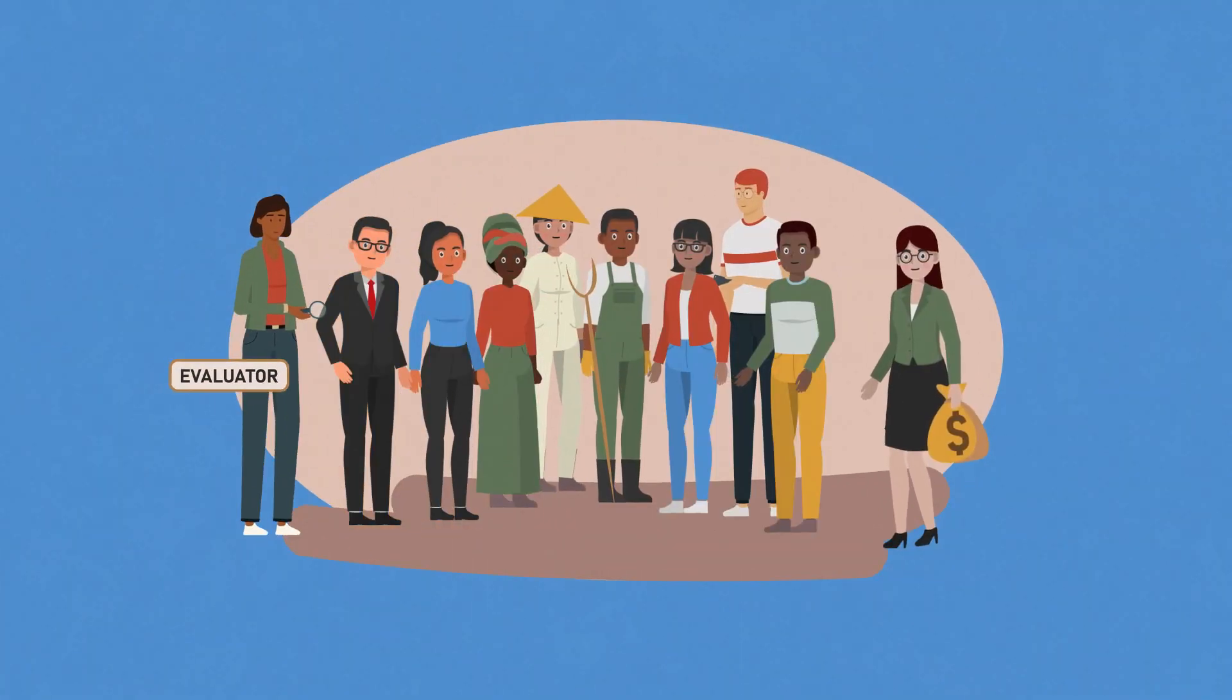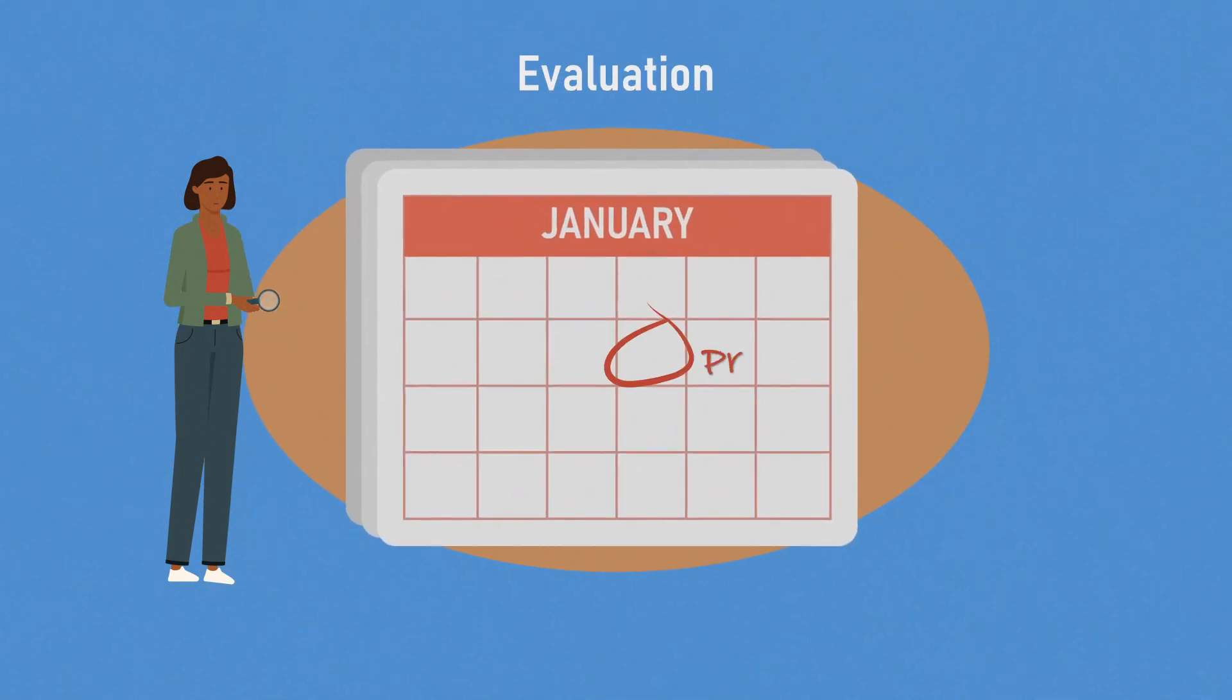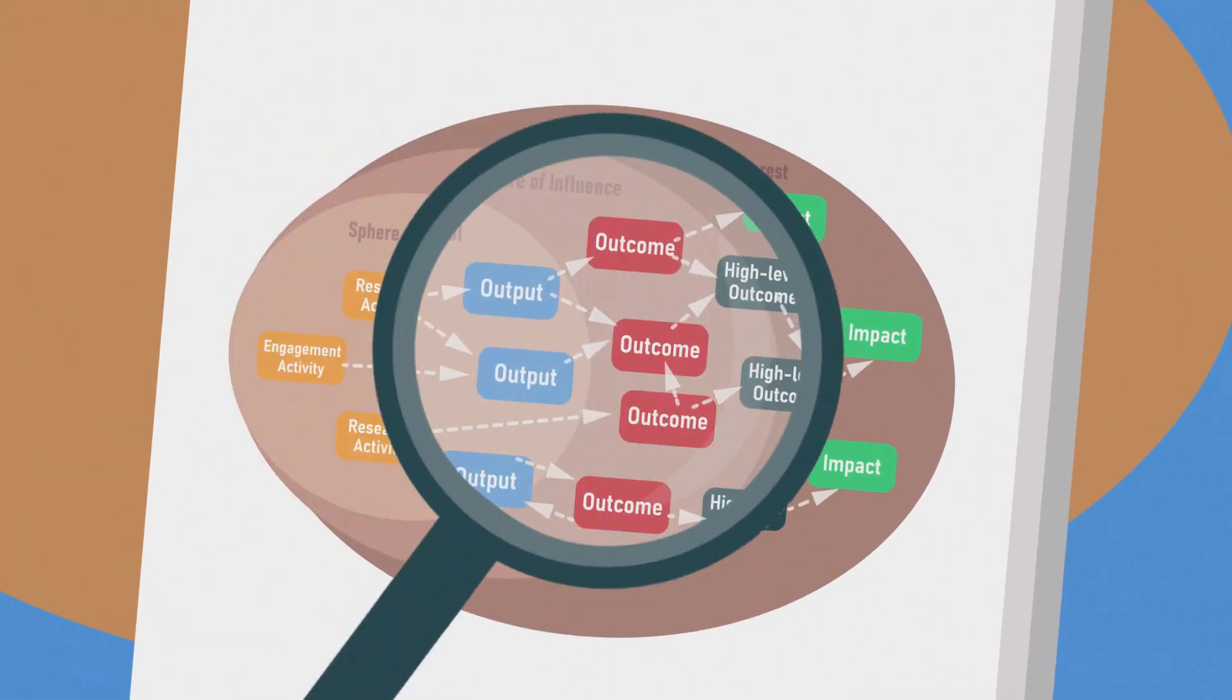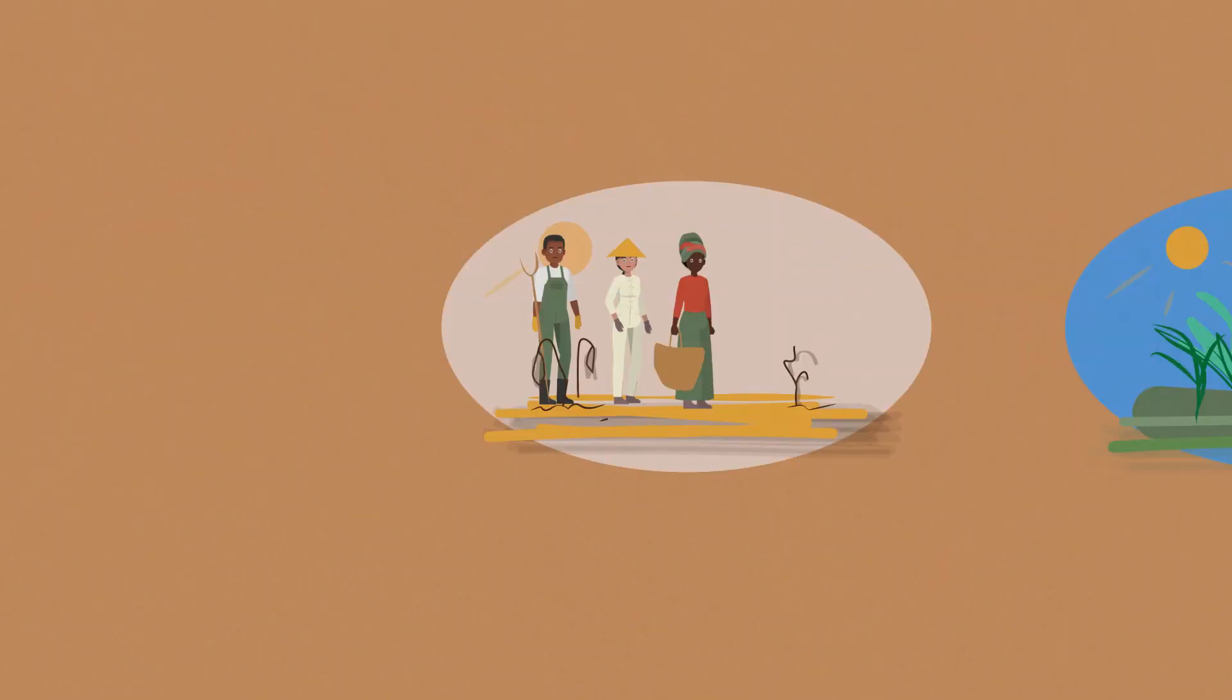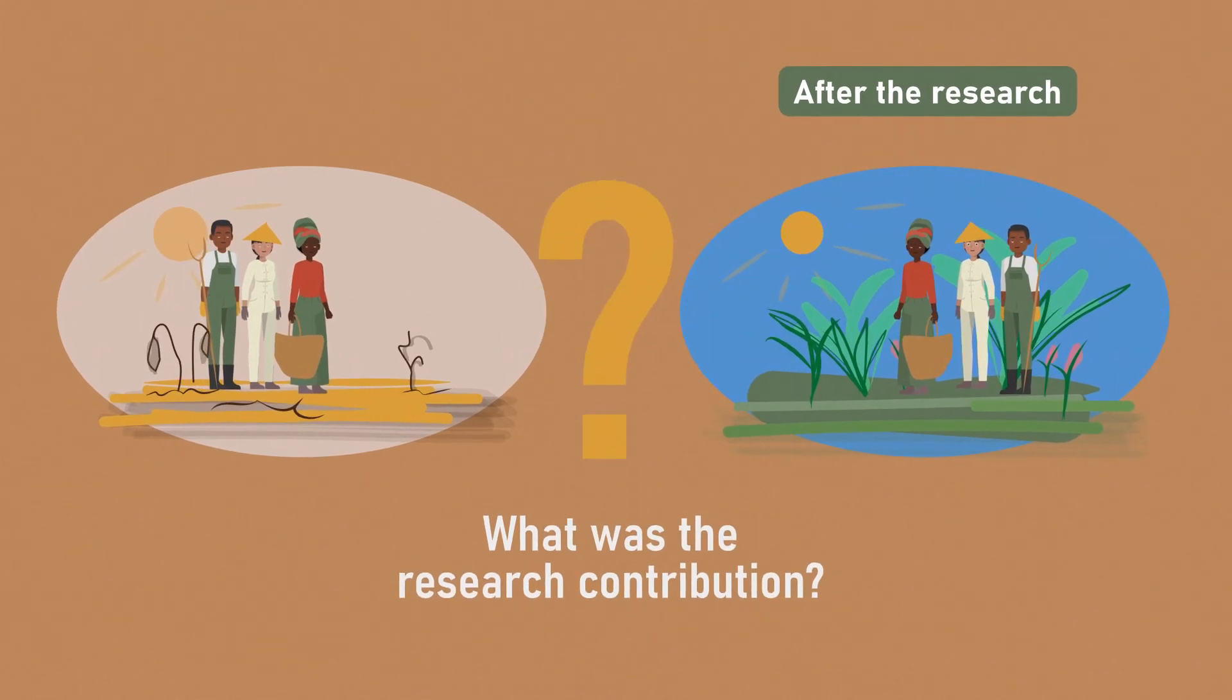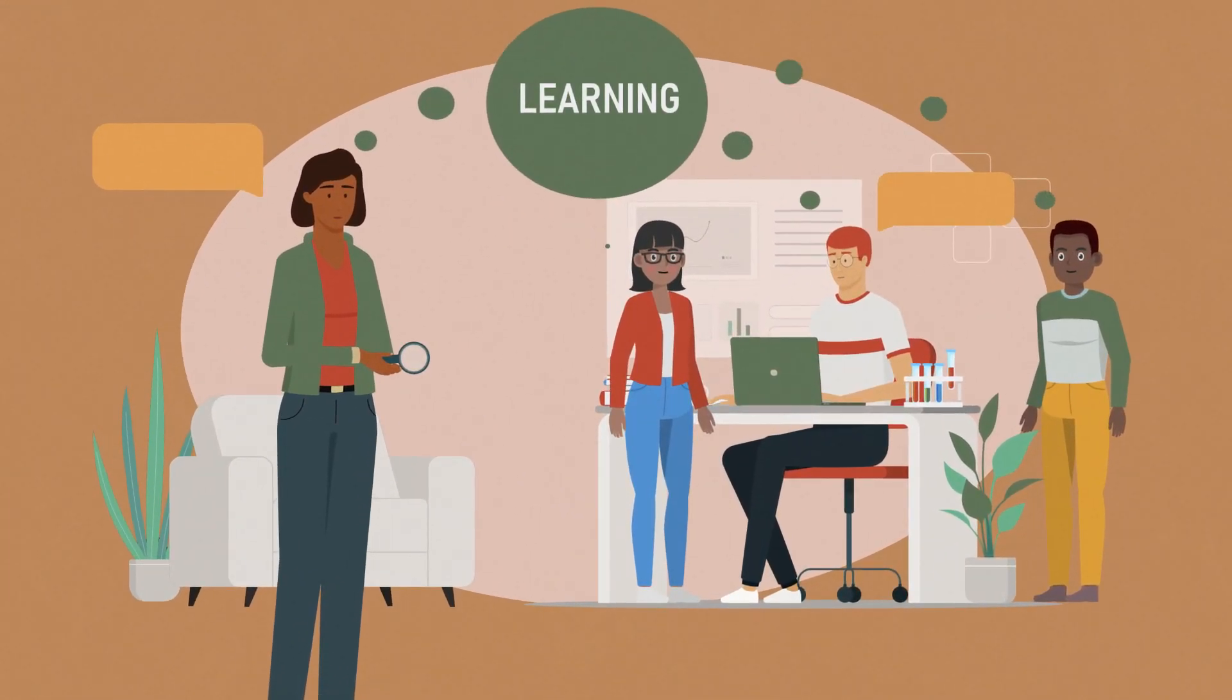Research for development needs to be accountable to what it sets out to achieve. When a research project or programme is completed, the theory of change provides a basis to assess whether what was expected to happen as a result of the research actually happened and why or why not. This generates learning on how to do research for development more effectively in that specific context.